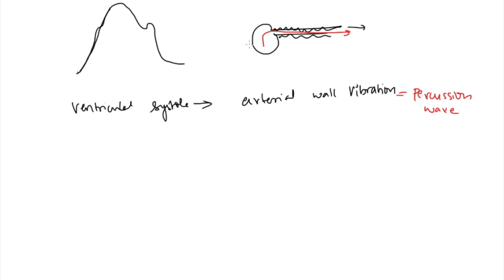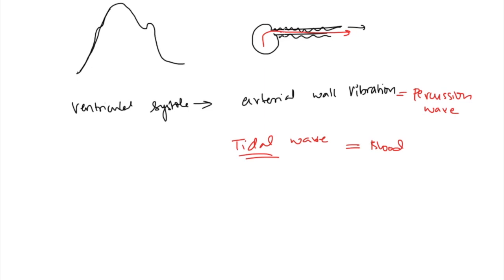Blood arrives a little later, and when it does, you get the tidal wave. The word 'tidal' always refers to volume — just as tidal volume in respiration refers to the volume of air, and tidal waves in the ocean refer to volume of water. So here, the tidal wave represents the actual blood volume arriving in the vessel.